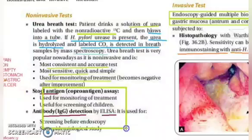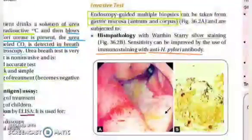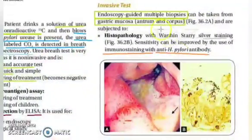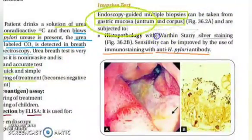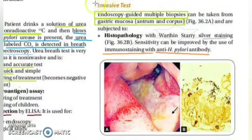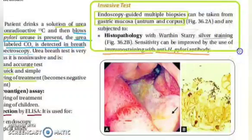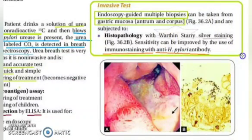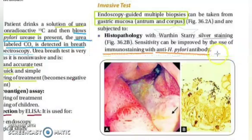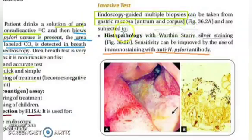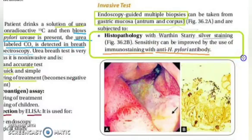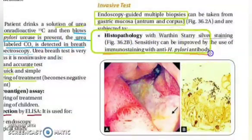You also have antigen detection and antibody detection in stool, though we will not go into details of that. Moving on to invasive tests: in invasive testing, endoscopy is performed. Endoscopy-guided multiple biopsies are taken from the gastric mucosa of the antrum and the corpus, and that biopsy is then subjected to histopathological examination.